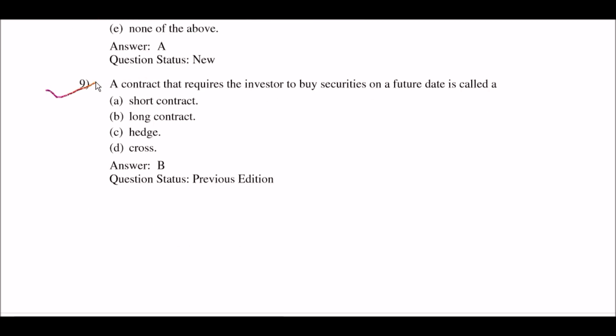Next question: a contract that requires the investors to buy securities on a future date is called — option A: short contract; option B: long contract; option C: hedge; option D: cross. The right answer is option B: long contract.